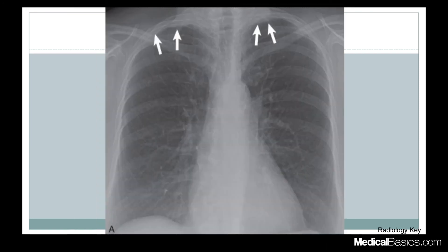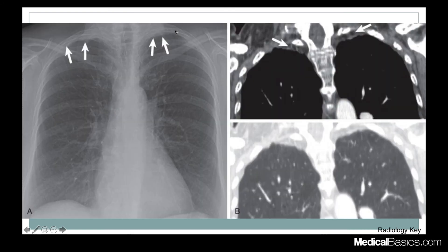This is another example where we see lobulated opacification of the apices bilaterally. We don't see vascular markings going past that, and we see a pleural line. Some people may wonder if this is a pneumothorax — it's a similar situation as before. This is what we call apical pleural thickening, which can be caused by a number of things. That is not a pneumothorax. When we look at the CT, we can see this is all soft tissue density — that's what we're seeing there — pleural thickening rather than a pneumothorax. If this were a pneumothorax on the lung window, it should not be white, it should be dark like air.